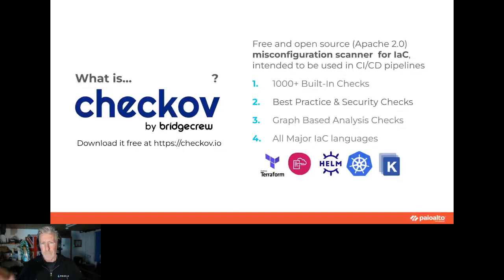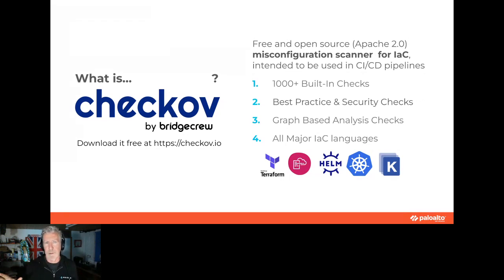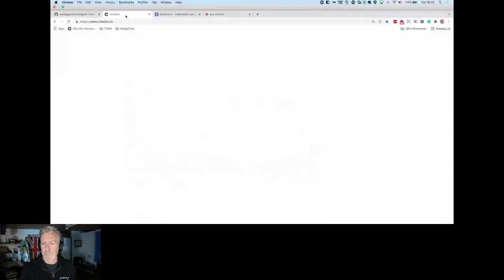Checkov is a free and open source misconfiguration scanner for infrastructure as code, originally intended to be used in CI pipelines. It has lots of different rules and checks across many IaC languages. They're mainly best practices — some are security-related, some are just 'this is a bad way to do things,' and some use graph-based analysis to check relationships. You can get it for free at checkov.io.